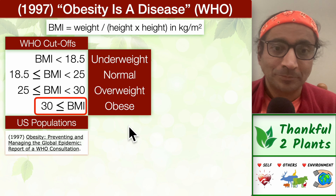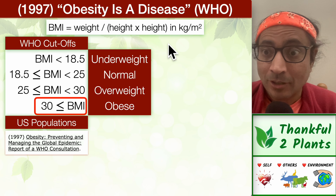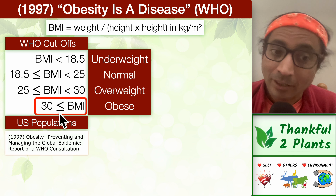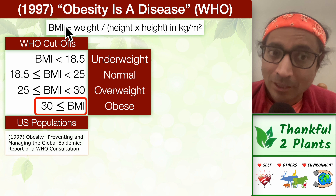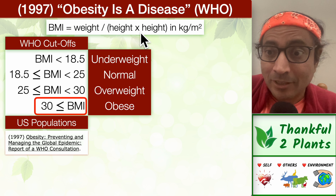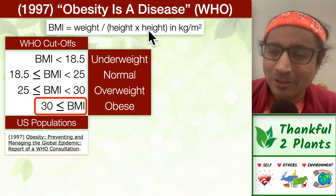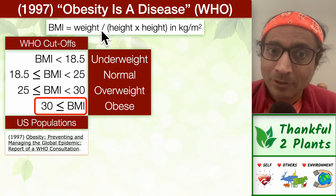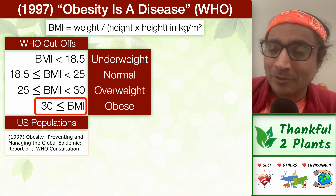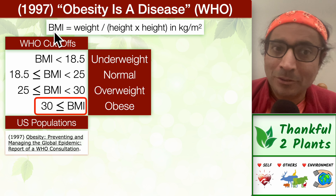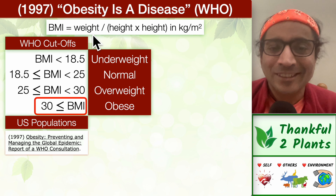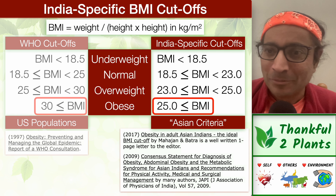Let's start with obesity. Obesity was defined to be a disease in a landmark publication in 1997. The criteria was BMI exceeding 30. BMI is defined this way — it looks a little complex, but for a specific individual, the height is kind of constant in adult life, so it is proportional to weight. If I become 10% or 20% heavier, my BMI goes up by 10 or 20%. It's linear in weight.